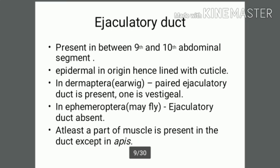The ejaculatory duct is present between the 9th and 10th abdominal segments. It is epidermal in origin and hence lined with cuticle. In Dermoptera, a paired ejaculatory duct is present, where one is vestigial. In Ephemeroptera (mayflies), the ejaculatory duct is absent. At least a pair of muscles is present in the duct, except in Aphis.